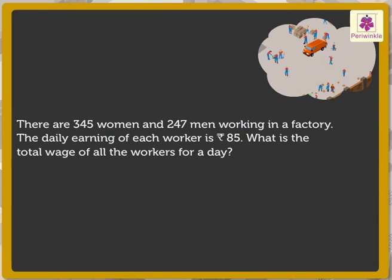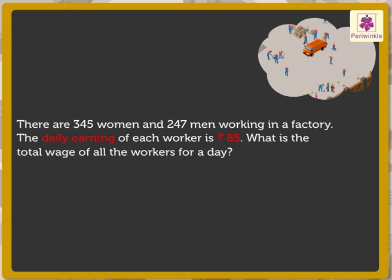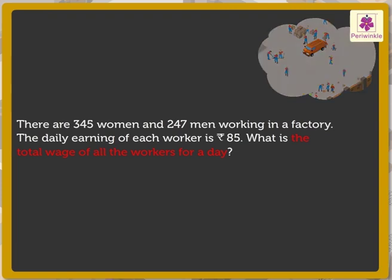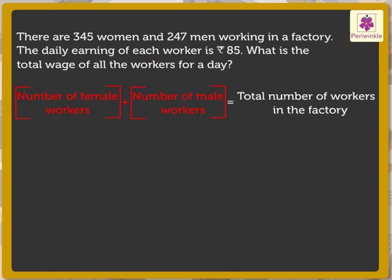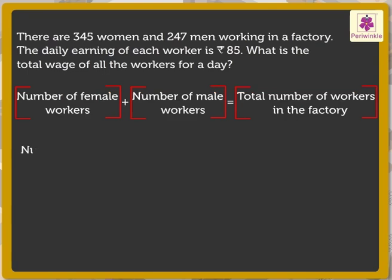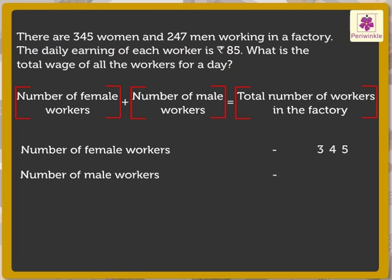To solve this, let us check what information we get from this problem. There are 345 women and 247 men working in a factory. The daily earning of each worker is 85 rupees. We have to find out the total wage of all the workers for a day. We will first add the number of workers to get the total number of workers.